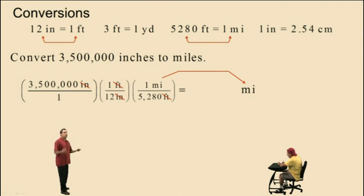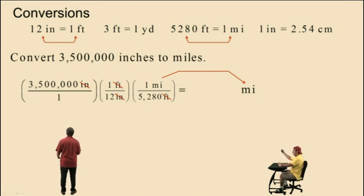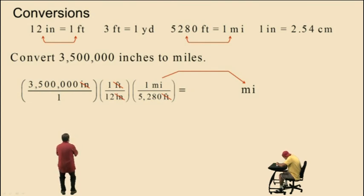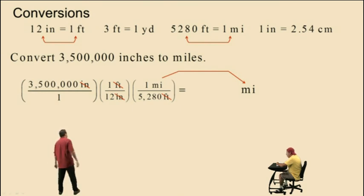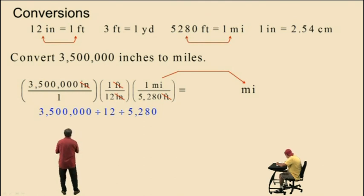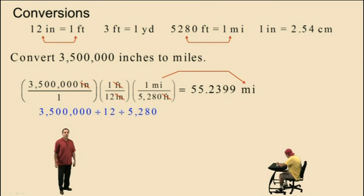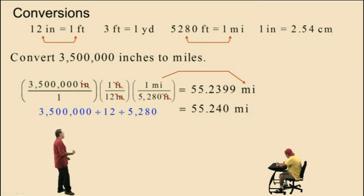We are left with the dimensions of miles, which is where we wanted to get to. Now we just perform our calculation. To perform this calculation with your calculator, you put in 3,500,000 divided by 12, divided by 5,280. Multiplying or dividing a number by 1 does not change its value, so we disregard ones — numbers on the bottom have to be divided out. That gives you 55.2399, and rounding to the nearest one-thousandths, our answer is 55 and 241 thousandths miles.